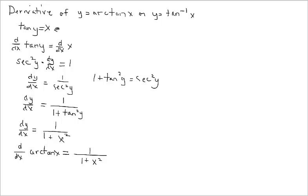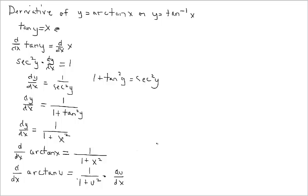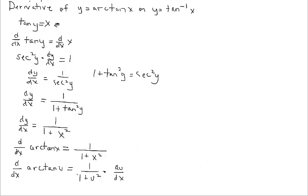Considering that we probably won't be finding the derivative of the parent function often — perhaps a composite arctan of u — applying the chain rule, everywhere we see x we replace it with u, and we multiply by the derivative of the inside function, du over dx. And this is the arctan formula, the derivative for the arctan.